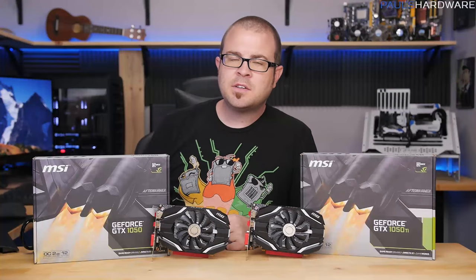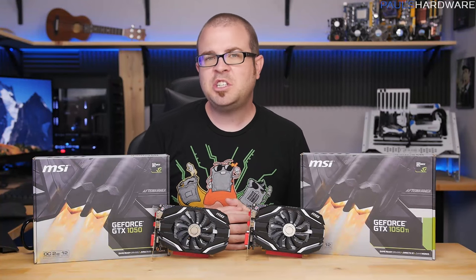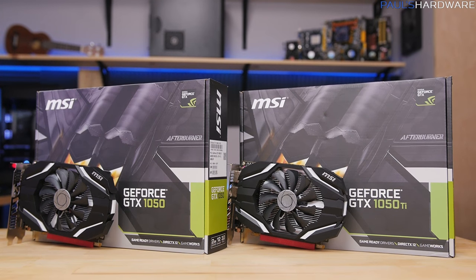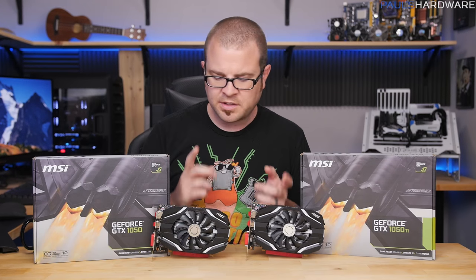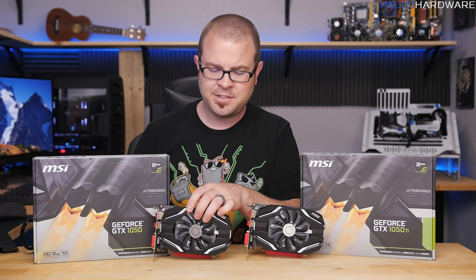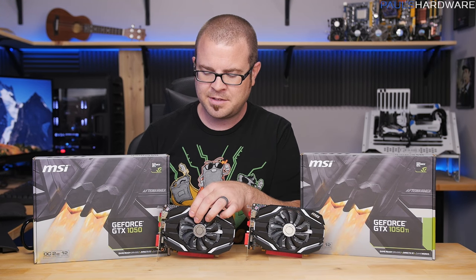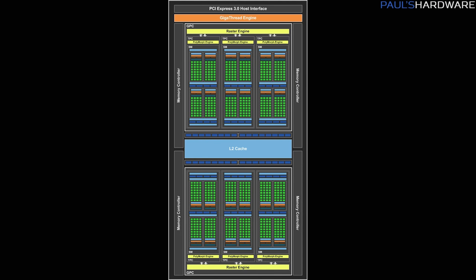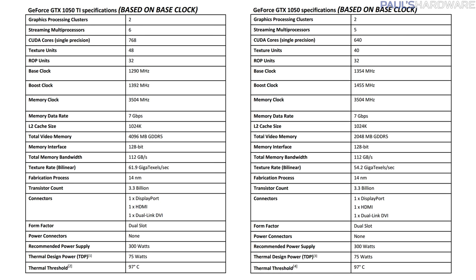Both of these graphics cards are based on GP107, a new GPU in the Pascal family from Nvidia, and there's only a slight variance between the 1050 and the 1050 Ti. The 1050 Ti has two graphics processing clusters and six streaming multi-processors, giving you 768 CUDA cores, 48 texture units, and 32 ROP units. The base clock is 1290 and the boost clock is 1392 megahertz.